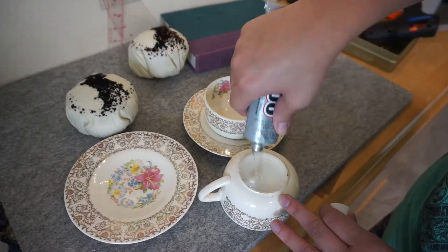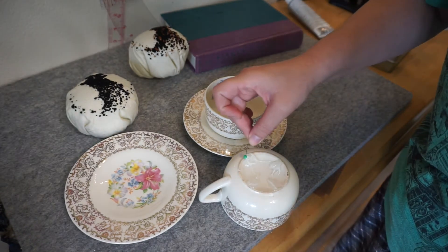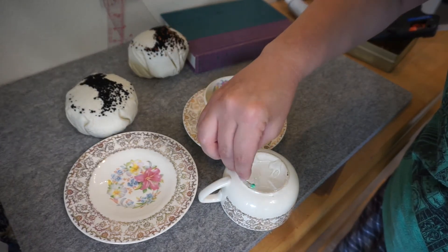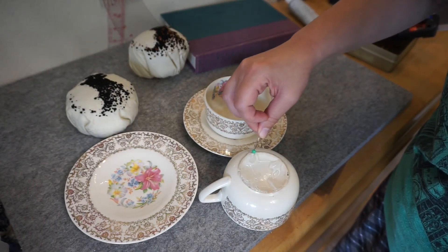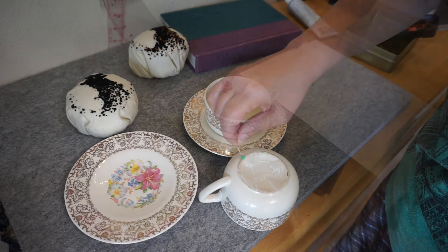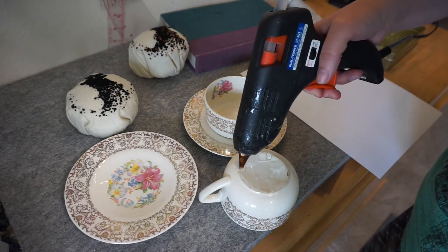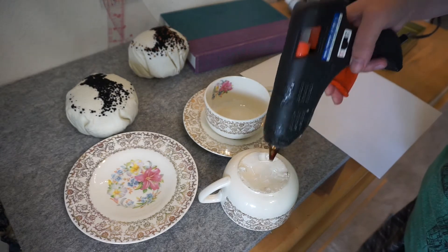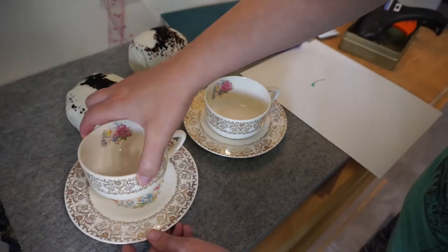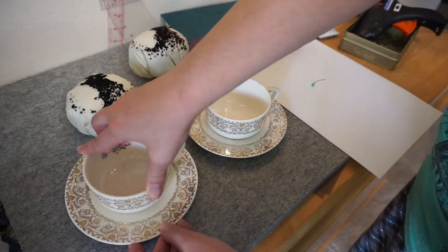To glue my teacup onto the saucer, I used E6000 and hot glue. First, I put the E6000 on and I spread it around a little bit, before taking my hot glue gun and adding a few dabs before placing my teacup onto the saucer. And it holds really well.